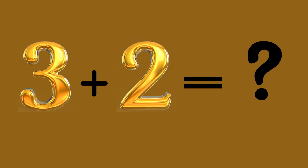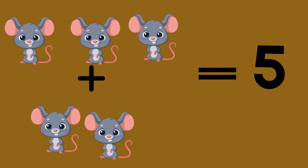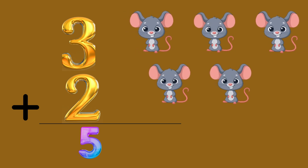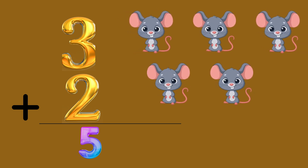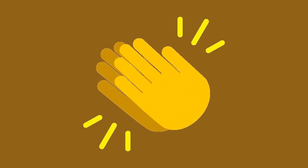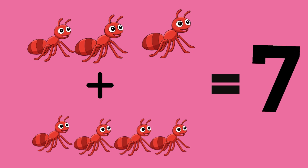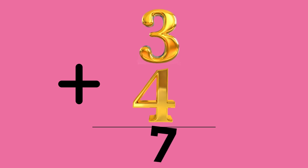Three plus two equals five: three rats plus two rats equals five rats. So, three plus two equals five. Three plus four equals seven: three ants plus four ants equals seven ants. So, three plus four equals seven.